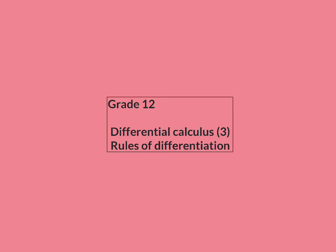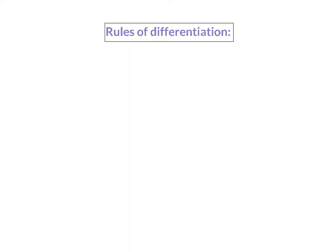In this lesson, we are going to have a look at the rules of differentiation, which will help us to calculate the derivative faster. In the previous two lessons, we had a look at the process of determining the derivative using first principles. This is a very lengthy process. But, just like we have exponential laws that help us simplify exponential expressions more effectively, there are also rules of differentiation that help us to differentiate or determine the derivative faster.